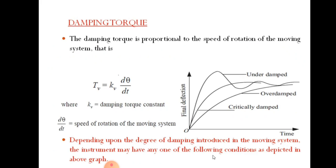First, we will see the damping torque and its graph. The damping torque is proportional to the speed of rotation of the moving system. Damping torque, denoted by Tv, equals K times dθ/dt, where Kv is the damping torque constant and dθ/dt is the speed of rotation of the moving system. So Tv is directly proportional to the speed of rotation dθ/dt. Depending upon the degree of damping introduced in the moving system, the instrument may have one of several conditions as shown in the graph.